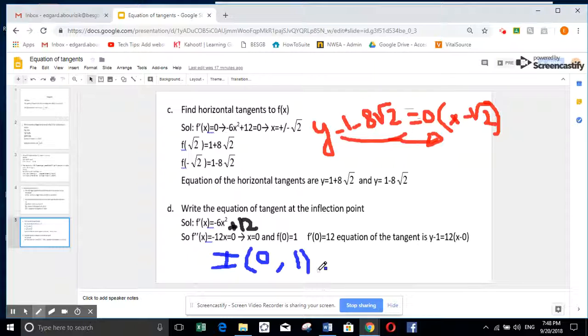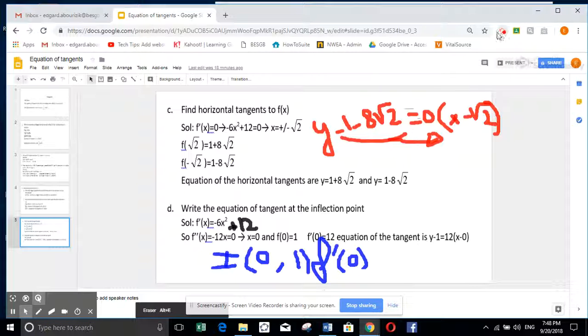To write the equation of tangent, what we need more, we need to find f prime of 0. And f prime of 0, this is the derivative. If you replace by 0 here, minus 6 times 0 plus 12, you get 12. So the equation of tangent will be y minus 1 equal 12 into x minus 0. I hope that you can now understand well the derivative, and see you tomorrow in class. Thank you for listening.